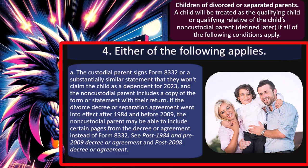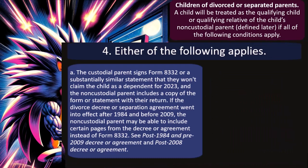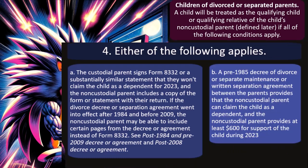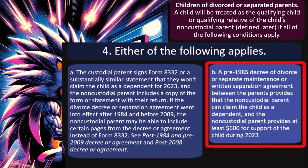If the divorce decree or separation agreement went into effect after 1984 and before 2009, the non-custodial parent may be able to include certain pages from the decree or agreement instead of Form 8332. You can see Publication 1984 and pre-2009 decree or agreement and post-2008 for more details. Also, a pre-1985 decree of divorce or separate maintenance or written separation agreement between the parents provides that the non-custodial parent can claim the child as a dependent, and the non-custodial parent provides at least $600 for support.